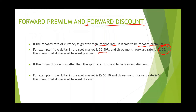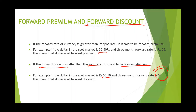If the forward price is smaller than the spot price, it is said to be a forward discount. For example, if the dollar price today is 55 rupees 55 paisa, but if you purchase after three months it is only 55 rupees — meaning you are paying 50 paisa less if you purchase after three months. This is what forward discount is.